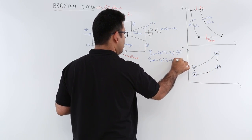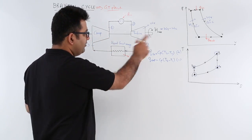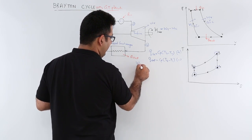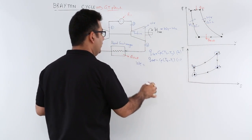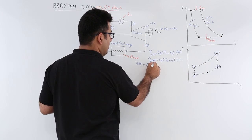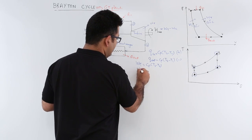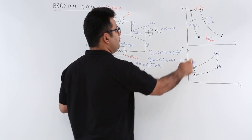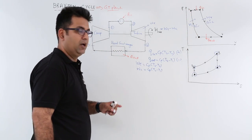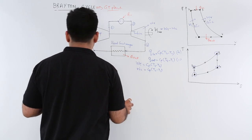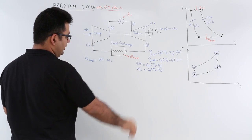The turbine work output for process 3 to 4 is cp times (T3 minus T4), and the compressor work input for process 1 to 2 is cp times (T2 minus T1). The net work output W_net is simply W_turbine minus W_compressor.